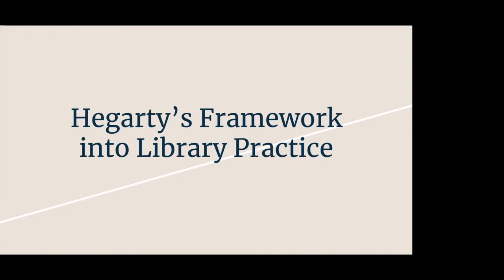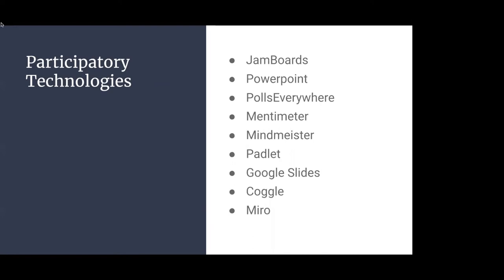This all sounds great, but how do the attributes fit into a class, especially in a single session library workshop? This next section will detail how each of these can be applied to a one-shot session. It's always good to take stock of what you and your institution have access to. What we had, in terms of open technology, were Jamboards, PowerPoint, and other Google Drive technologies, Polls Everywhere and Mentimeter for surveys and quick interactives when we only had 30 minutes in a class, MindMeister for brainstorming, and Padlet. With all of these tools, we could come up with creative activities and interactives for students in the classroom.